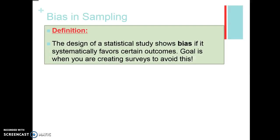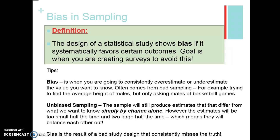What is bias in sampling? Bias in sampling is when a sample systematically favors certain outcomes. For example, if we're surveying how tall all male students are in Fairfax County but we stand outside a basketball game and sample those males, that's going to be biased — every time we do that, we'll probably get males that are taller than everybody else. Bias means you're consistently overestimating or underestimating. It's not just one random tall person; every time you do the survey, you get people that are too tall or too short. This often comes from bad sampling design.